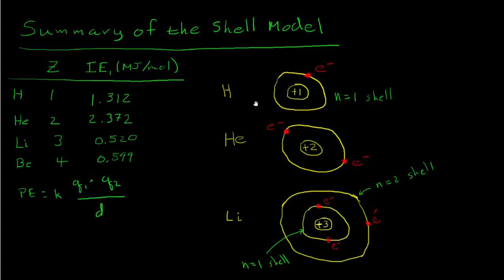Our model for hydrogen is patterned off Bohr's model. In the center is the plus one nuclear charge — remember the nucleus is really tiny compared to the whole atom. There's an orbit around this nucleus, and instead of thinking of it as a ring, we imagine it as a shell, so the electron could be anywhere on the surface of a sphere. This electron has a minus one charge. We call this the n = 1 shell.